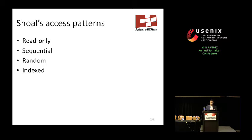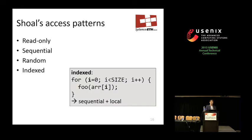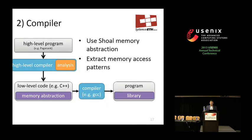Indexed means we access every element of the array in sequential order, starting with the first and ending with the last, so every element is accessed exactly once. With that, I'd like to show what we do in the compiler. We modify the compiler to generate a low-level version using our memory abstraction, and we extract the memory access patterns I've been describing.